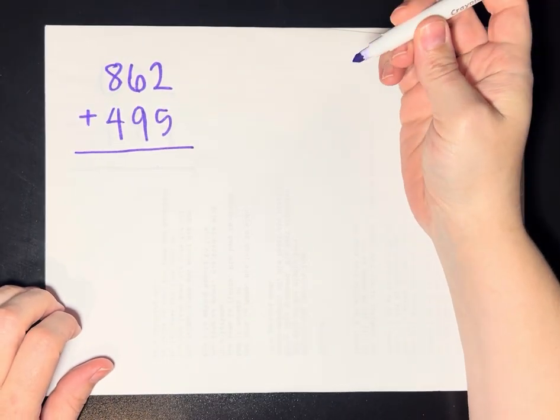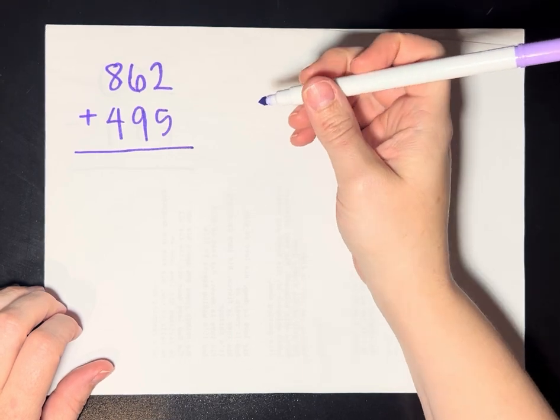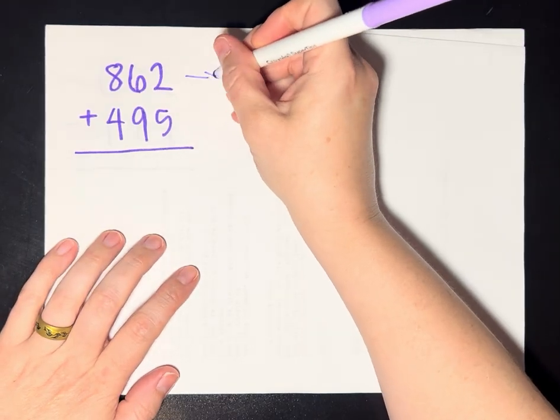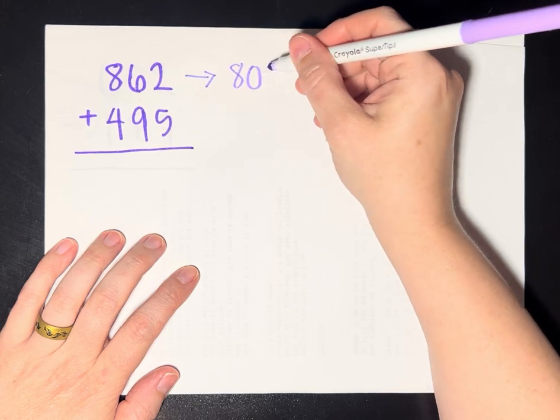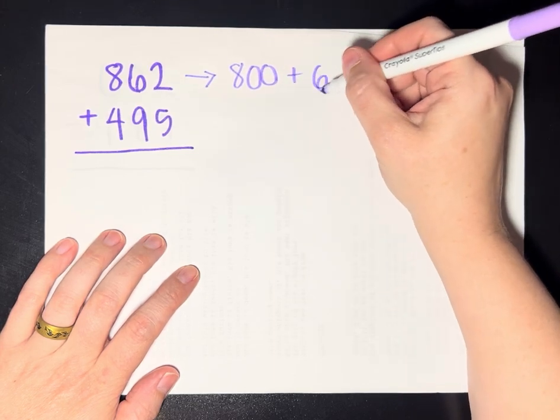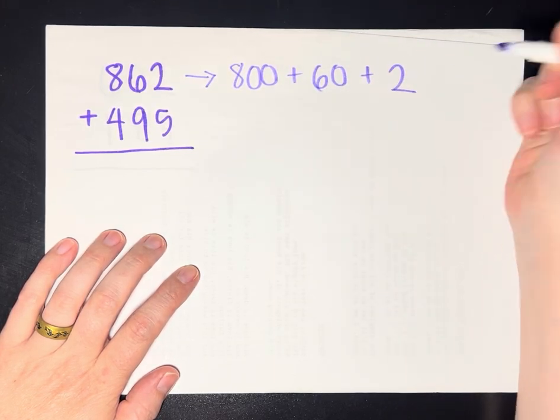do something a little bit different. So this particular algorithm, what we're going to do is first rewrite our 862 using place values as 800, and then 60, and then 2.